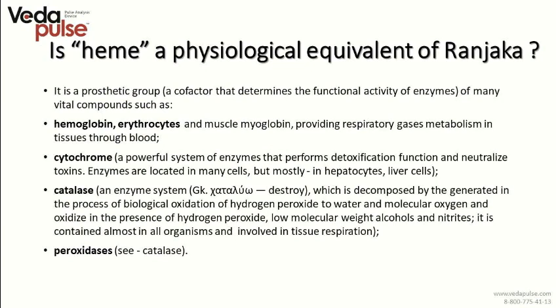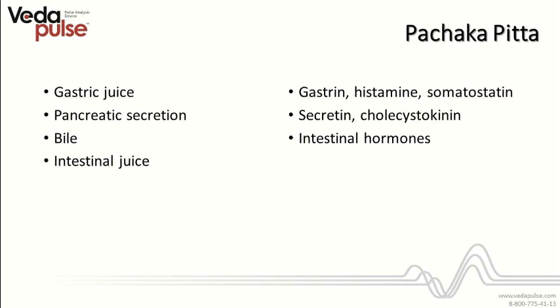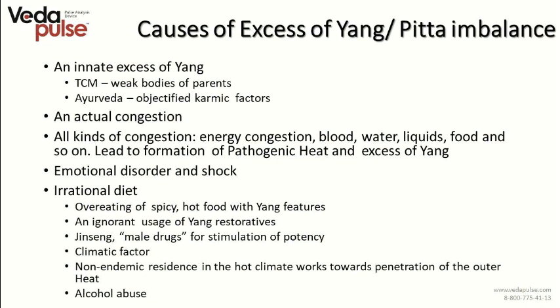Domination of Pitta Dosha means domination of five fire sub-Doshas which form Pitta. Phranjaka Pitta imbalance, which is typical for this constitution type, leads to different pathological states connected with blood. Phranjaka Pitta is first of all responsible for hormonal regulation through hormones such as gastrin, histamine, somatostatin, secretin, cholecystokinin, and intestinal hormones, as well as gastric secretion presented by gastric juice, pancreatic secretion, bile, and intestinal juice. Phranjaka Pitta also represents the immune system of the skin, melatonin and melanin production, and the vascular system of the skin.